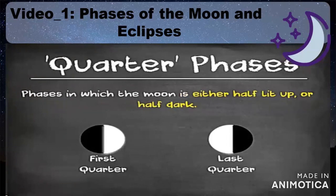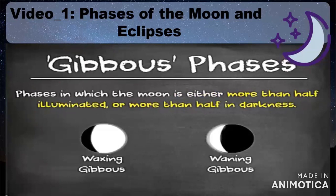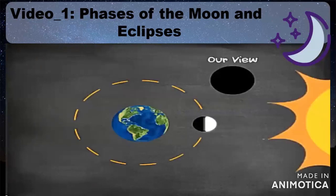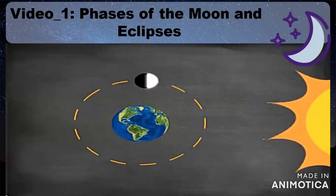Quarter phases are phases in which the moon is either half lit up or half dark. Gibbous phases are phases in which the moon is either more than half illuminated or more than half in darkness. The new moon is the moon fully in darkness, and the full moon is fully illuminated. As the moon orbits the earth, it changes shape.